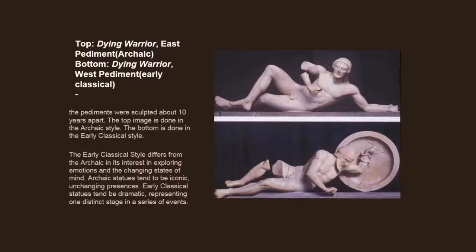In the early classical sculpture from the west pediment, there is more emotion — he's twisting, turning, and we can see a little of the agony of the warrior. So it's more dramatic, more one stage in a series of events; we begin to have part of a narrative. That narrative is one we also saw in the metope sculpture with Athena, Atlas, and Heracles.